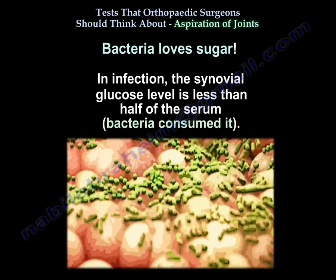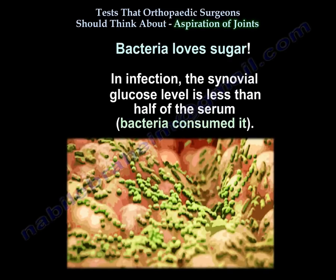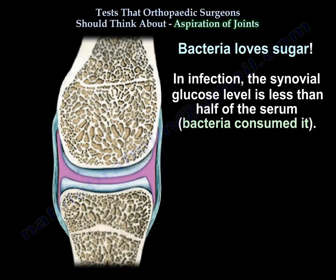Bacteria love sugar. In infection, the synovial glucose level is less than half of the serum level because the bacteria consumed it.